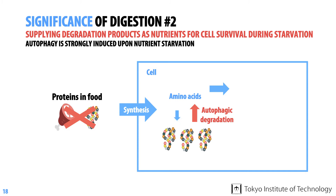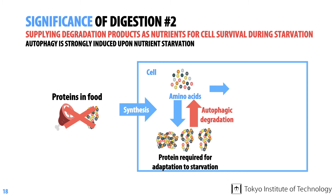Cells need to urgently adapt to these conditions. Autophagy is strongly induced in response to nutrient starvation and degrades existing proteins to produce amino acids, which are used for the synthesis of proteins required for adaptation to starvation, as well as the production of energy and other important molecules. In addition to proteins, other cellular components are also degraded and recycled by autophagy. Thus, autophagy plays an essential role for cells to survive nutrient starvation.